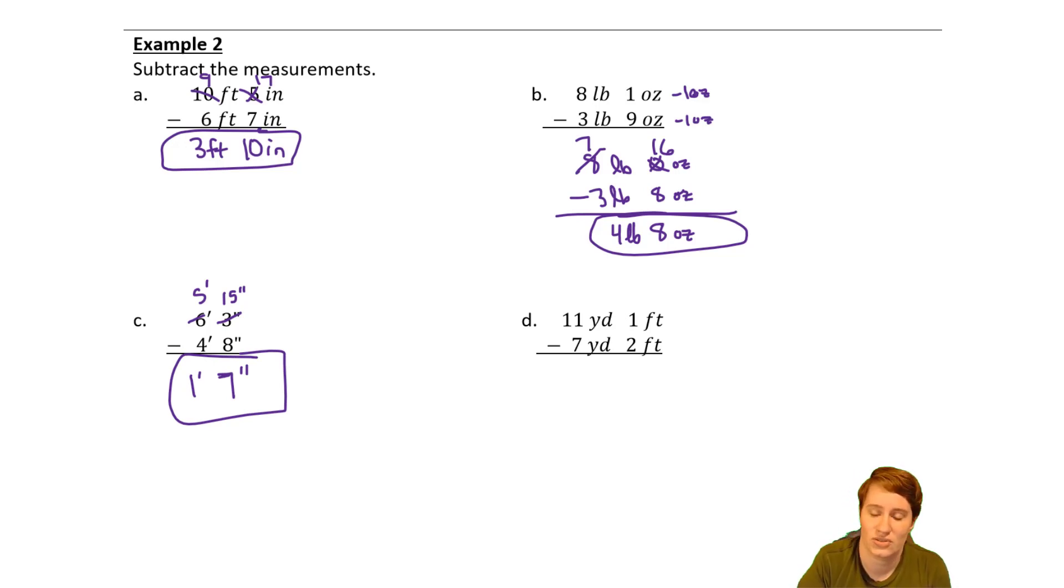And then yards and feet. So there's three feet in a yard. We can go, okay, I need to borrow a yard, which is three feet. So that's going to turn that into four feet, four feet minus two feet is two feet. And then 10 minus seven is three. So voila, there we go.